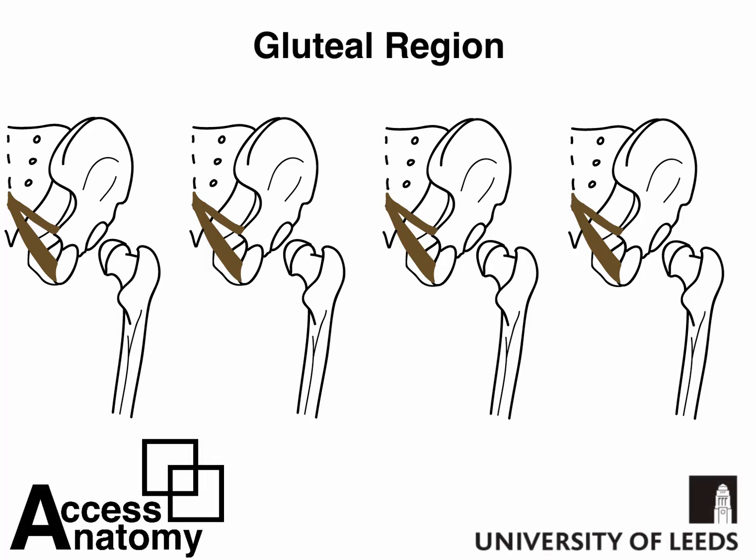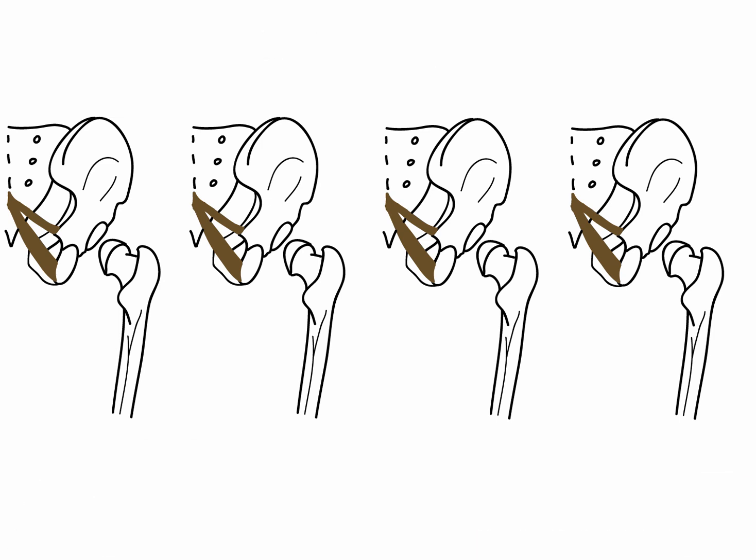Welcome to this Access Anatomy screencast from the University of Leeds that's going to outline the musculature of the gluteal region, the posterior aspect of the hip joint.